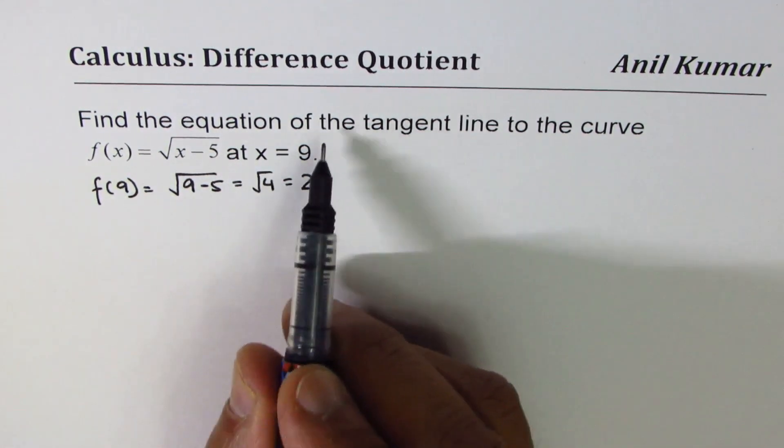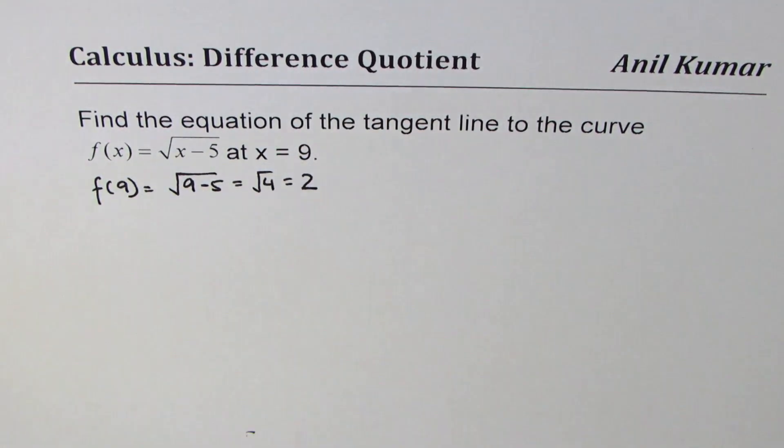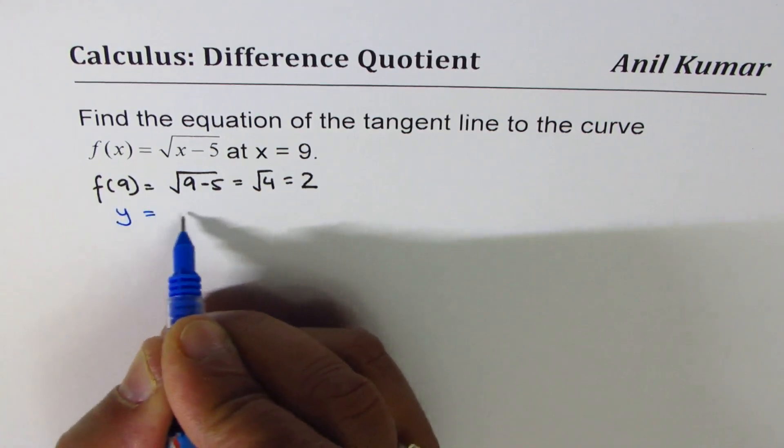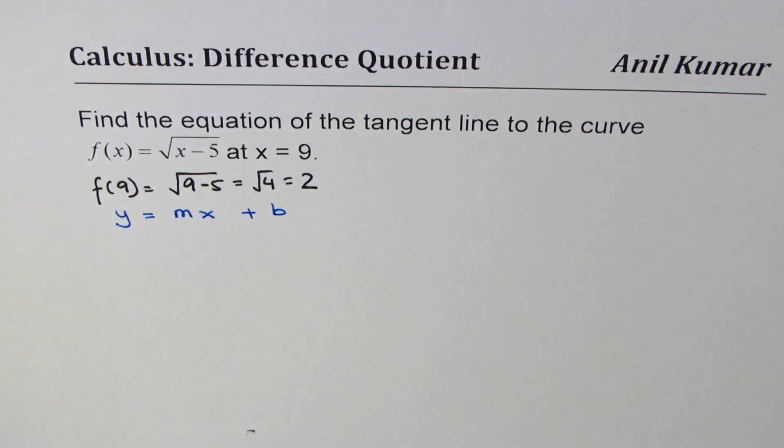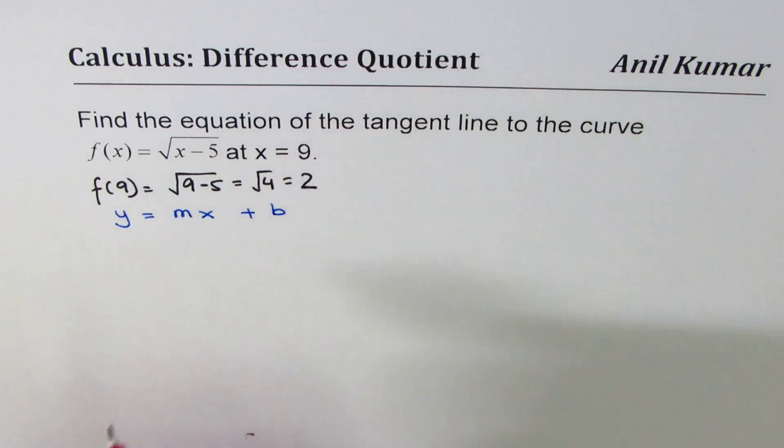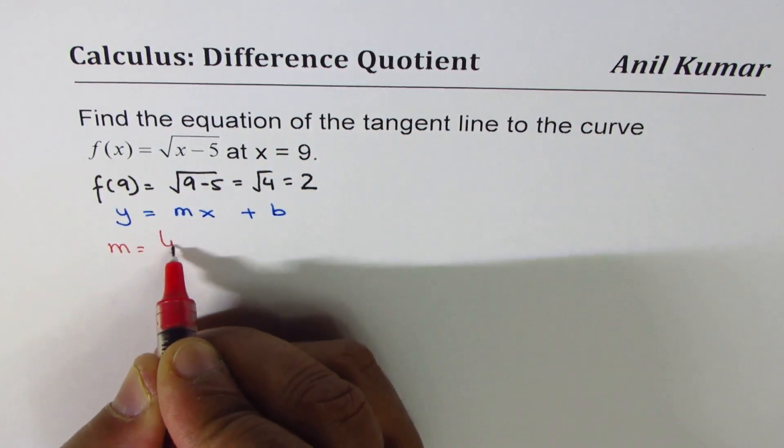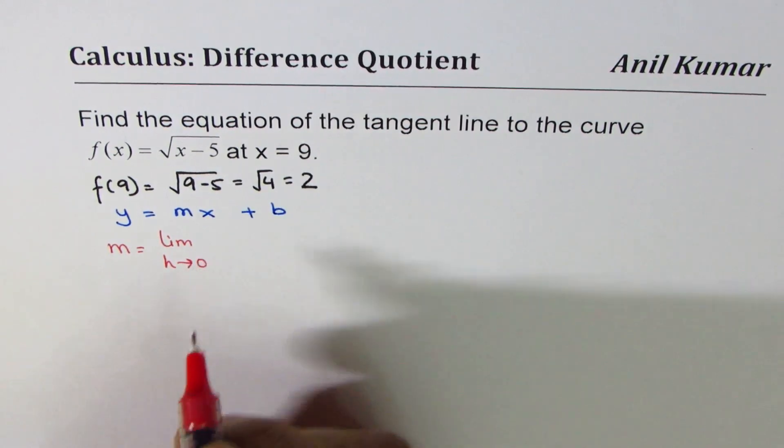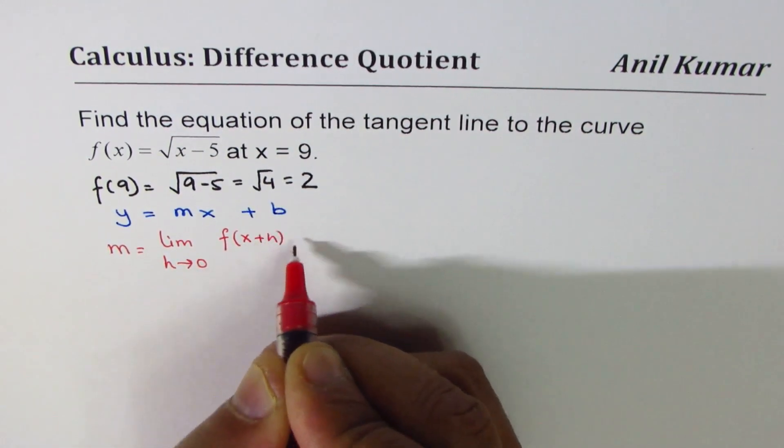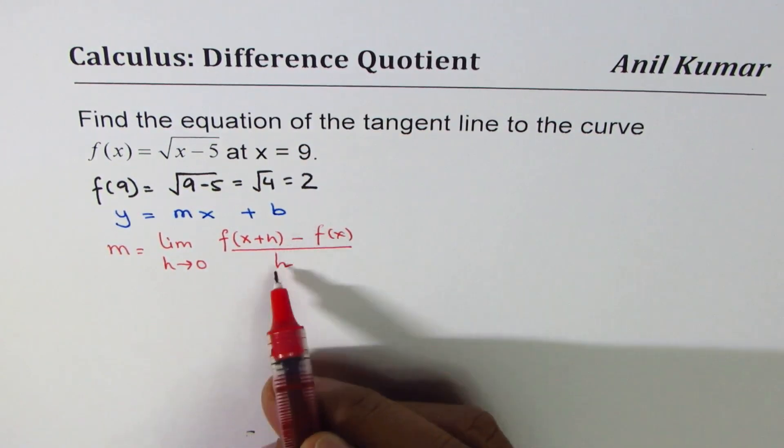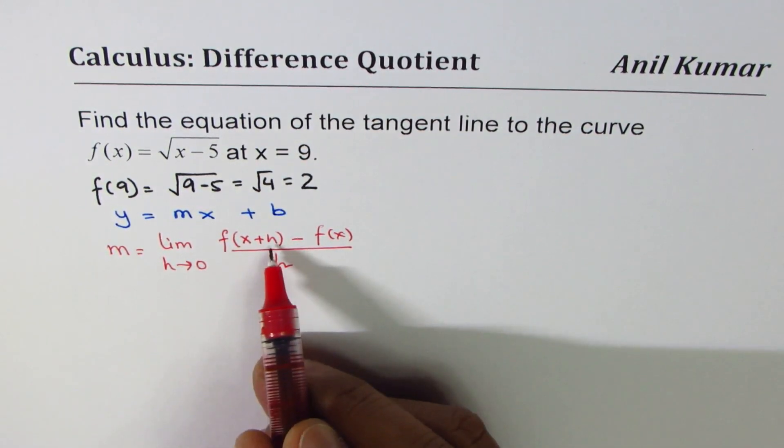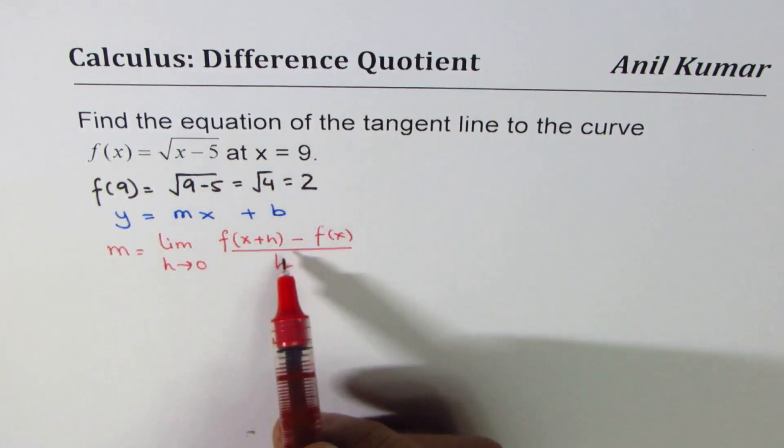Since we need to find equation of a tangent line, a tangent line could be written as y equals mx plus b. So first thing is we need to find slope of this line. To find slope of the line, we can use difference quotient method, which is slope m equals limit when h approaches 0 for f(x+h) minus f(x) over h. So that's rise over run. h is very small, so we are finding secant which approaches a tangent.